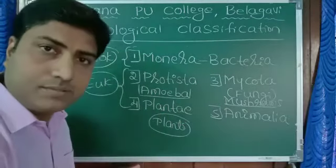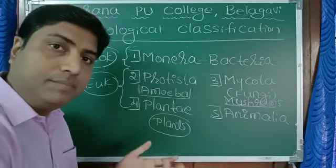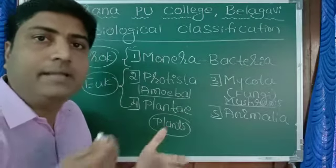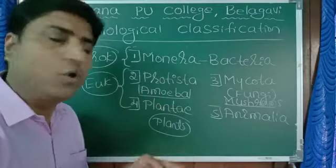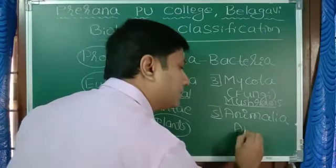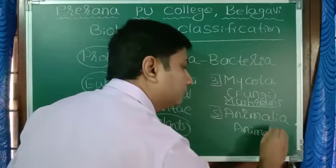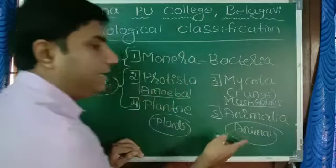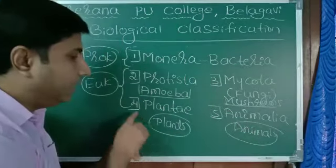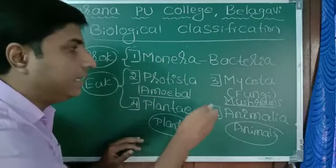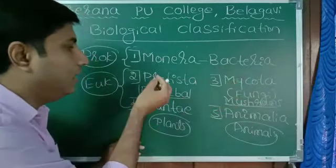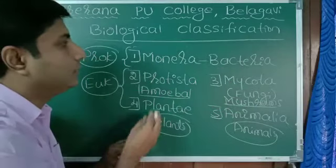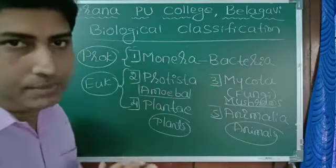Animalia - all the animals. May be cockroach, earthworm, human being, tiger, rat, cat, donkey, horse, sheep, goat. All the animals are included under animalia. Plants are included under plantae. Mushroom and other organisms are included under mycota. Amoeba is example for protista. And bacteria are example for Monera.